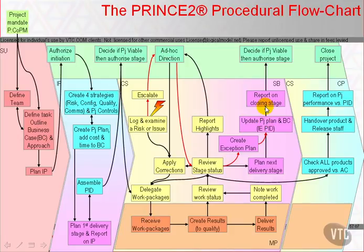The stage is summarised in an end stage report, and the net result is that the project board considers a revision to the project initiation information on which they authorise the project, and a stage plan on which they may authorise a replacement stage. Exception plans always run from the point of exception to the end of the current stage.